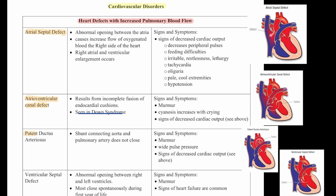Then we have patent ductus arteriosus. This is when the shunt connecting the aorta and pulmonary artery does not close. Signs and symptoms are a murmur, a wide pulse pressure, and signs of decreased cardiac output. Then we have ventricular septal defect.